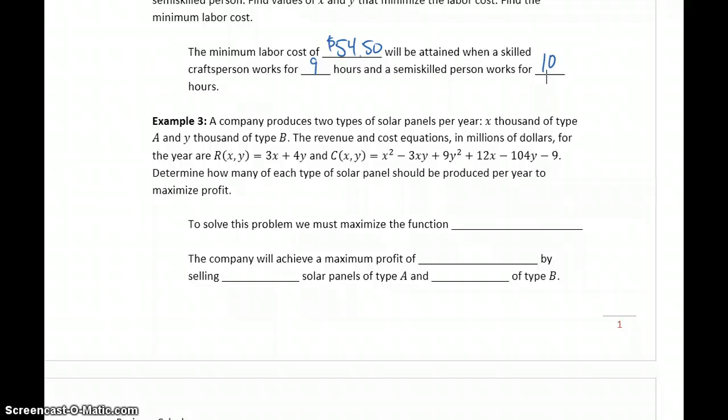In example 3, we have a company that produces two types of solar panels, x-thousand of type A, y-thousand of type B. The revenue and cost equations in millions of dollars for the year are given. We want to determine how many of each type of solar panels should be produced to maximize profit.